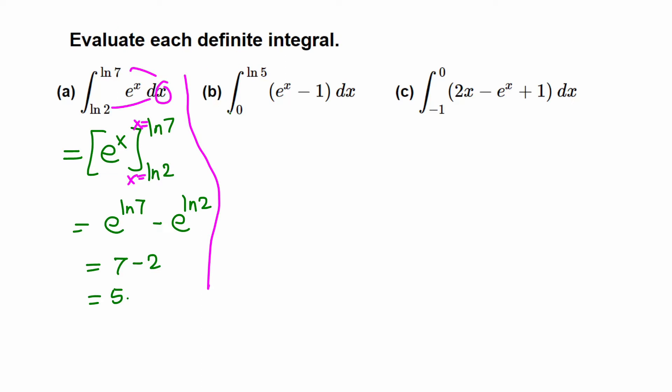So we get anti-derivative of e^x, which is e^x, minus anti-derivative of 1, that's just x. And we have to go from 0 through ln5.